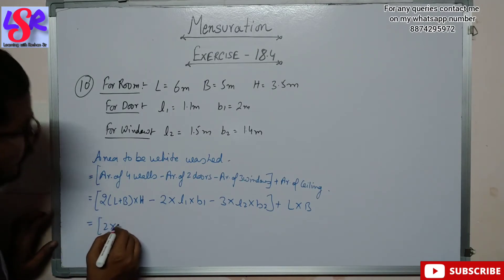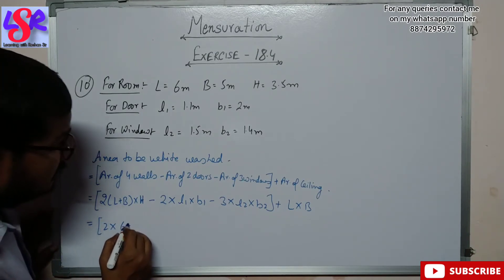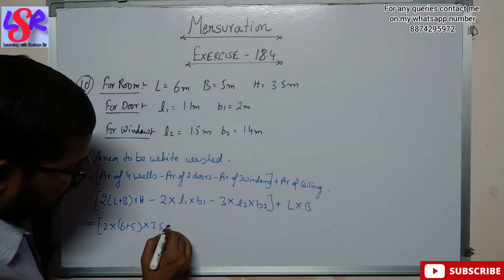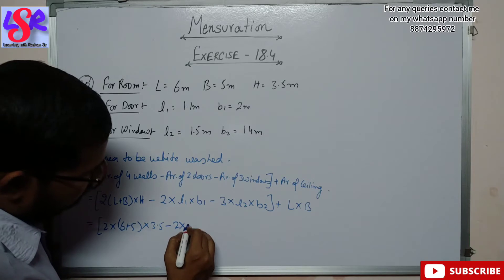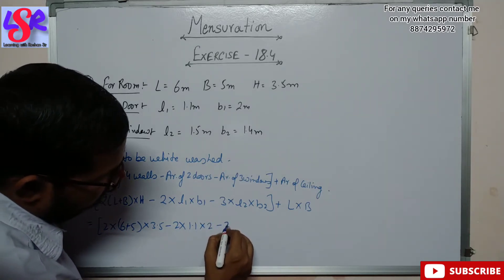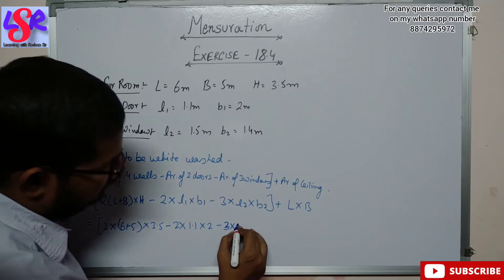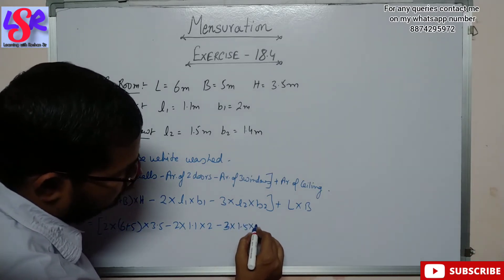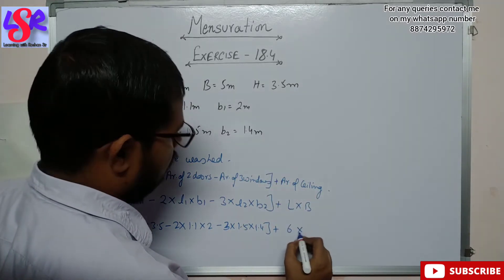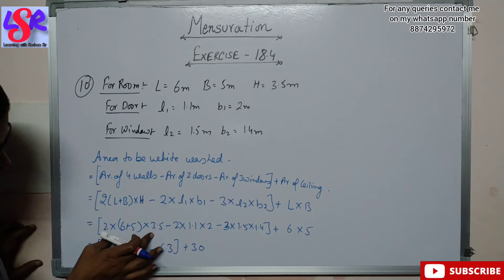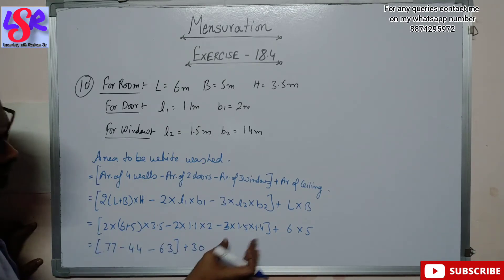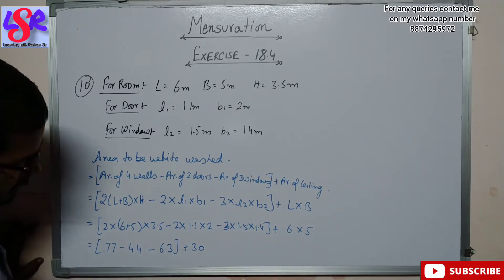Placing the values: 2 into (6 + 5) into 3.5, minus 2 into 1.1 into 2, minus 3 into 1.5 into 1.4, plus 6 into 5. This gives us 77, minus 4.4, minus 6.3, plus 30.